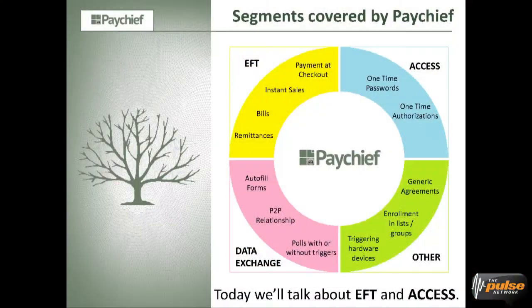We will talk a little bit about data exchange. In many situations we must exchange data electronically. With PayShift you can do auto-fill forms — fill forms automatically. You can have P2P relationships — not using Facebook or another social network, but in real life exchanging virtual business cards and so on. And we deal with pools with or without triggers. Pools are to choose some option from a list, but we also do something different: we can have triggers in the option, like 'call me now,' 'send me info,' 'I want it now.'